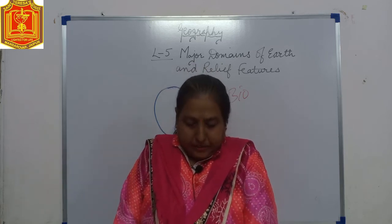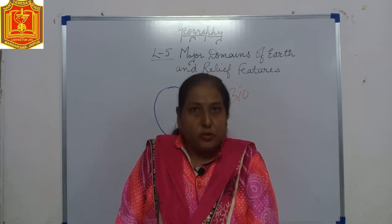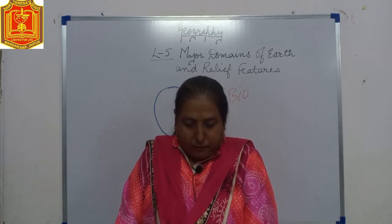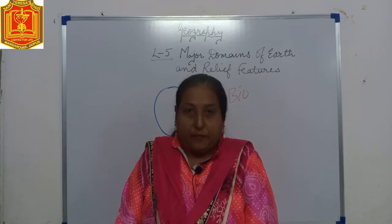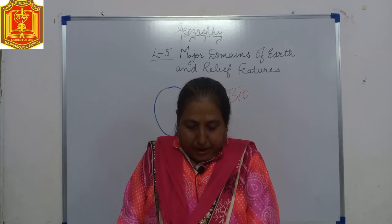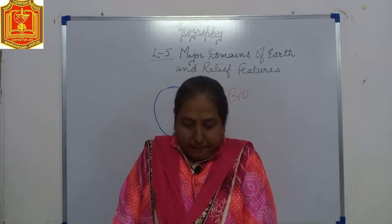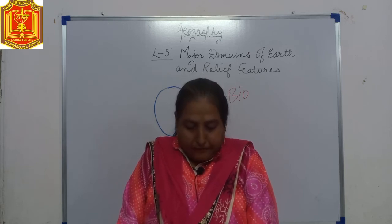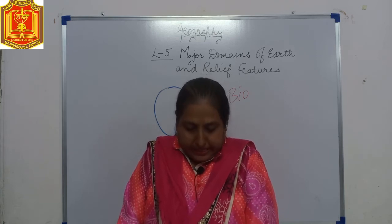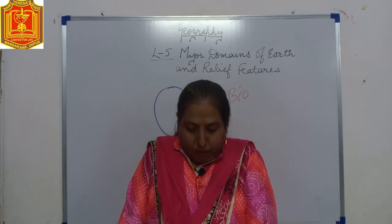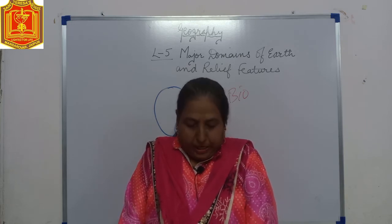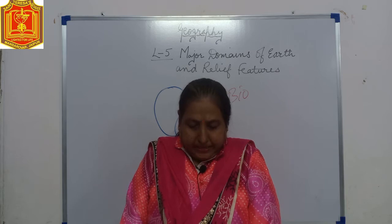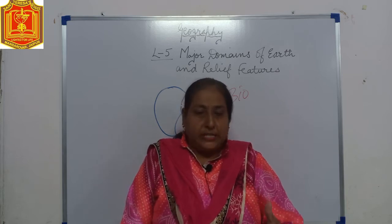Beside the oceans, there are smaller water bodies such as bays, seas, and gulfs. Oceans are vast expanses of salt water covering the greater part of the earth's surface. Seas are also quite vast but smaller in size compared to oceans and are almost surrounded by land. A gulf is a hollow carved out of a sea coast which lets water reach deep inland, while a bay is an inlet of the sea with a wider opening than a gulf. Examples include the Arabian Sea, Bay of Bengal, and the Persian Gulf.